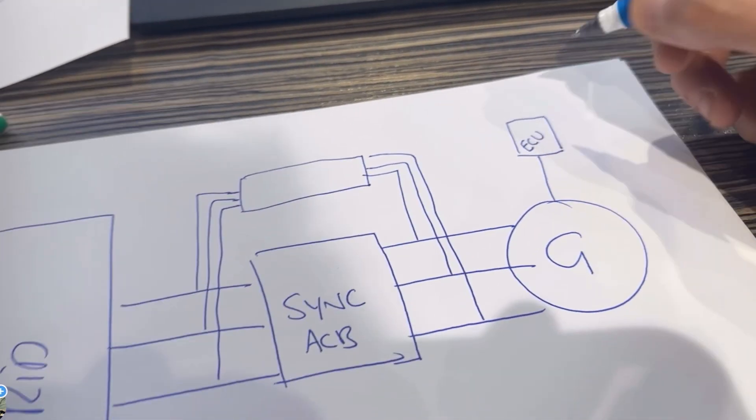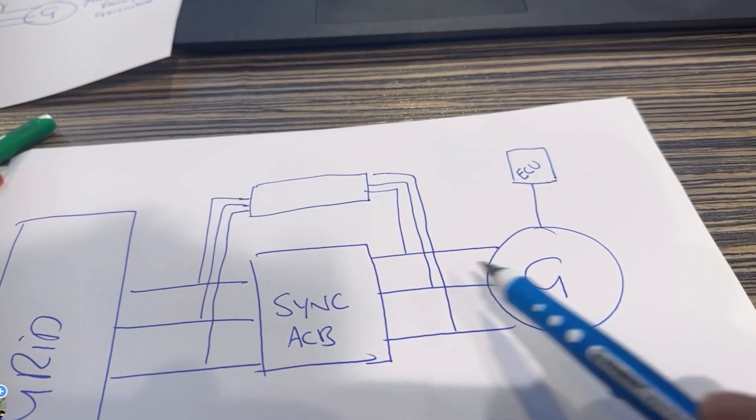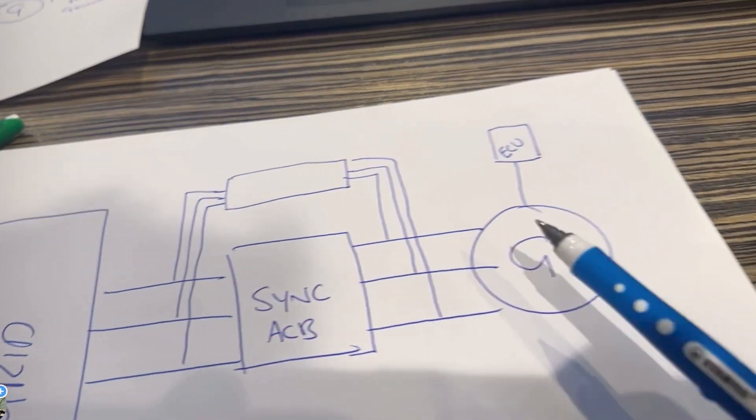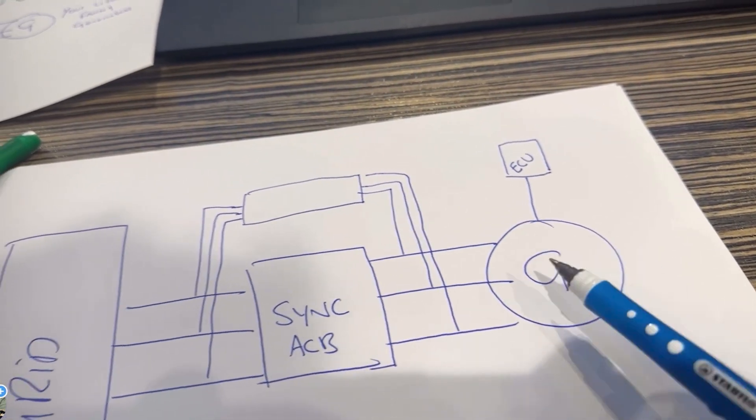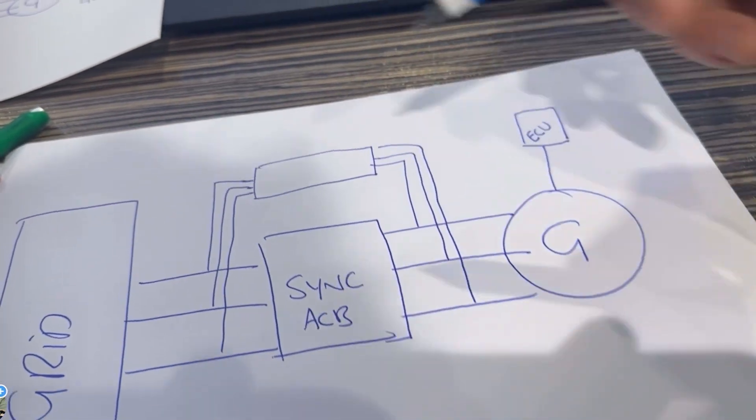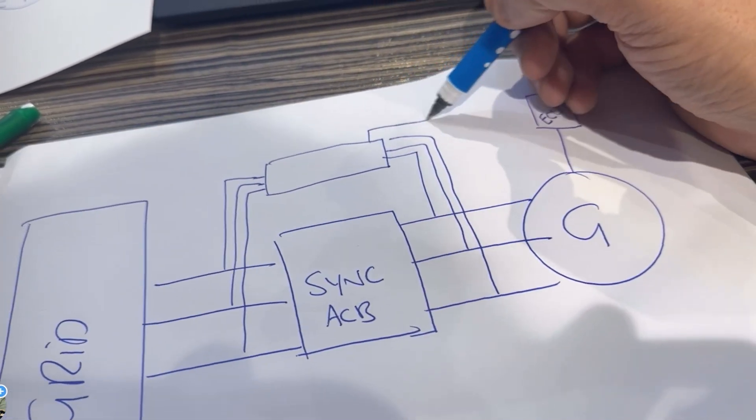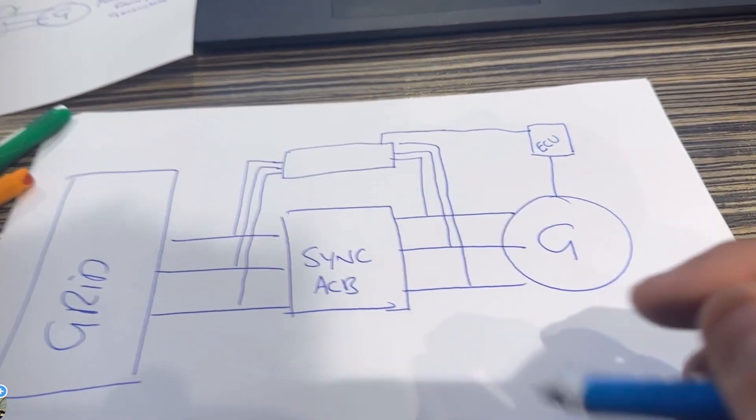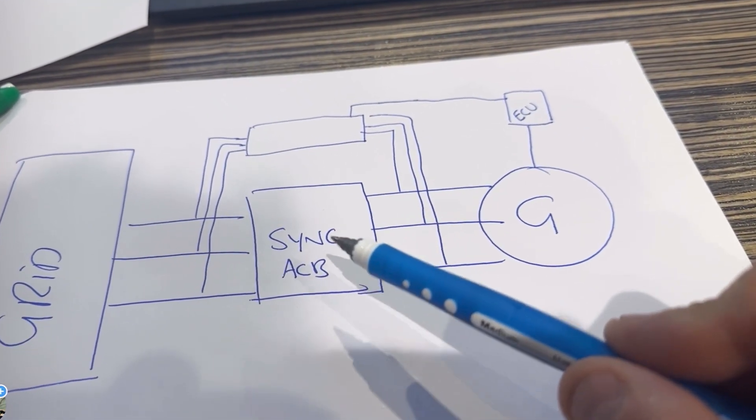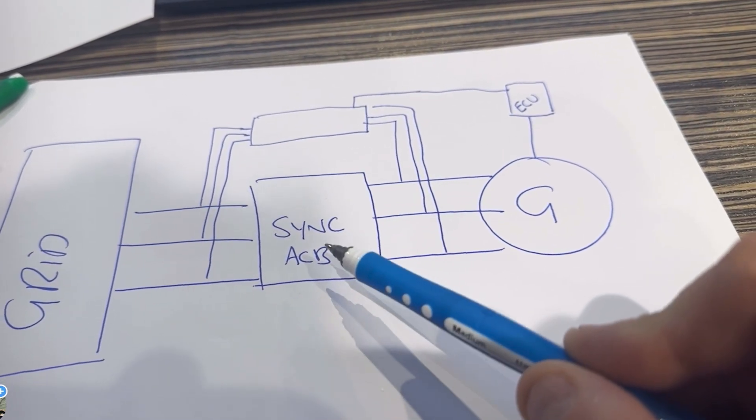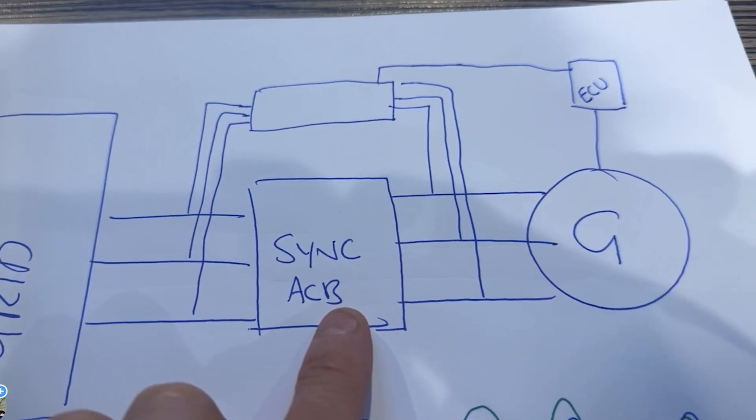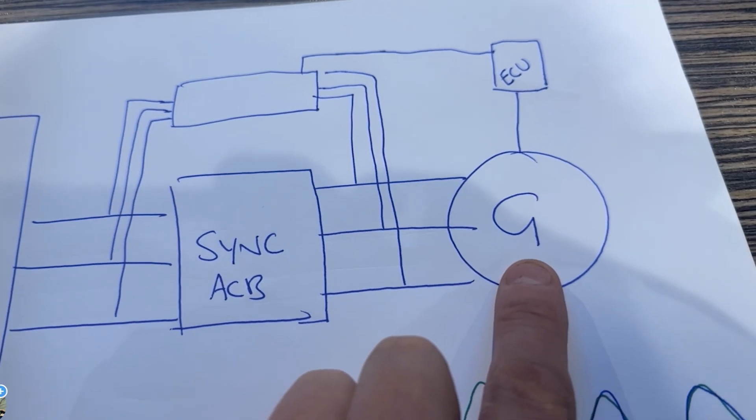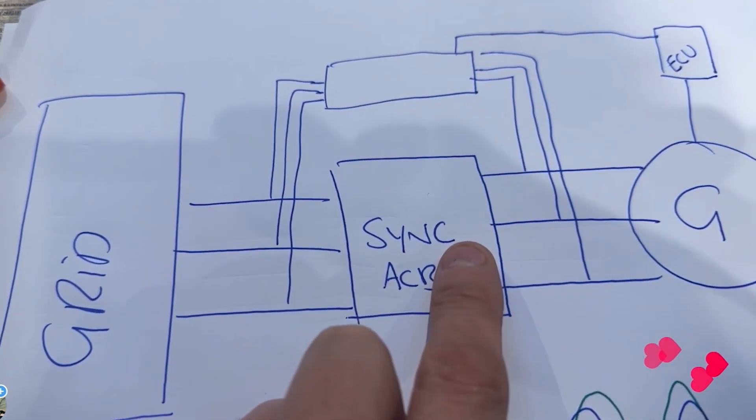The generator's engine will have an ECU, an engine control unit, like you have in your car. To keep it simple, if this does not match this, this probably needs to go faster or slower. That's not true but I'm just going to say that. So this brain is capable of adjusting the ECU to make the generator do different things so that it brings it into sync.